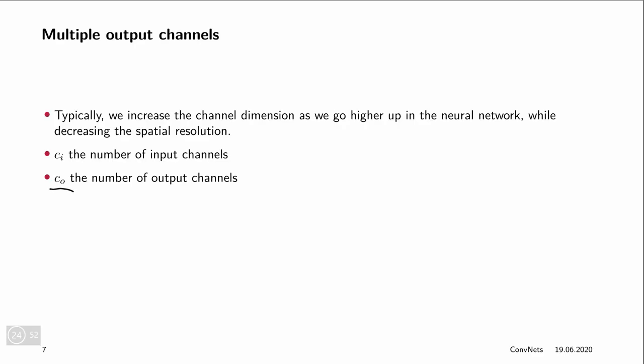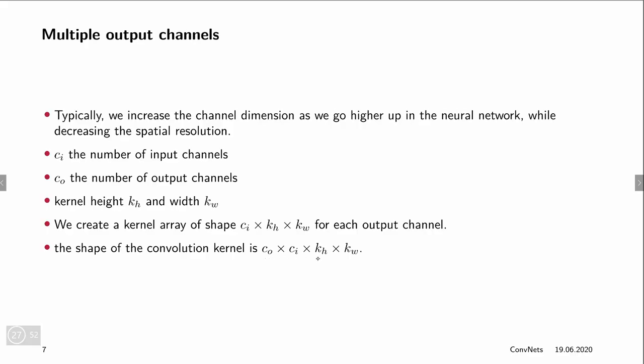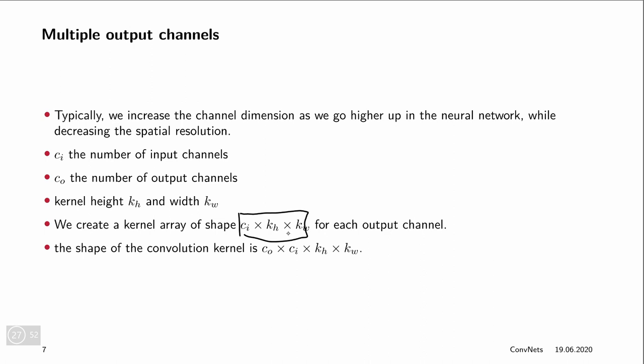So if CI is the number of input channels, then we actually introduce a fourth dimension in our kernel tensor that corresponds to the number of output channels — the number of channels that our desired output would have. The number of output channels is CO. So for a kernel of height KH and width KW, the size of the tensor that has CI input and CO output channels is CO times CI times KH times KW. Because this is basically a kernel of CI times KH per output channel.